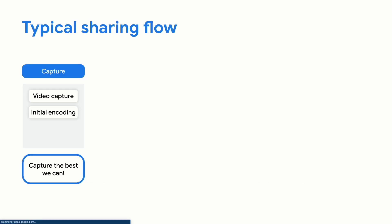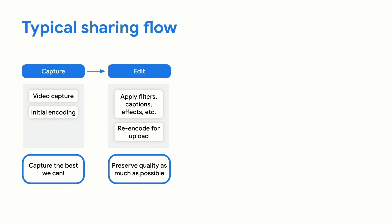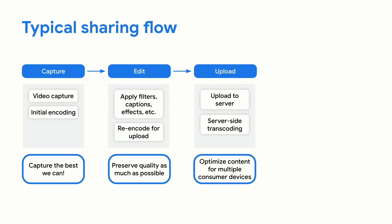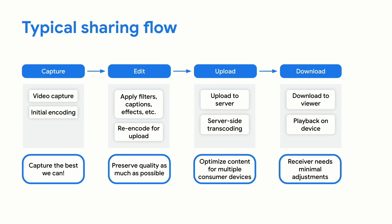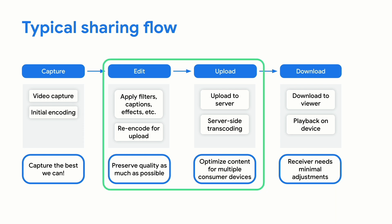The typical media sharing pipeline can be split into four broad steps. We start by capturing some media — this is where the image, video, or audio is initially encoded, and the goal here is just to capture the best quality we can. Next, there might be some editing involved. You might layer elements on top of your content, such as adding filters, captions, or effects, or you may be transforming the media by cropping or scaling. Throughout all of these edits, the main thing we want to do is preserve as much of the original quality as possible. After this, the content is likely to be uploaded somewhere — this is the step where you can perform further transcoding to try and optimize the content for multiple consumer devices. And lastly, the content is downloaded to a device for playback, ideally with minimal touch-ups required on the receiving end.